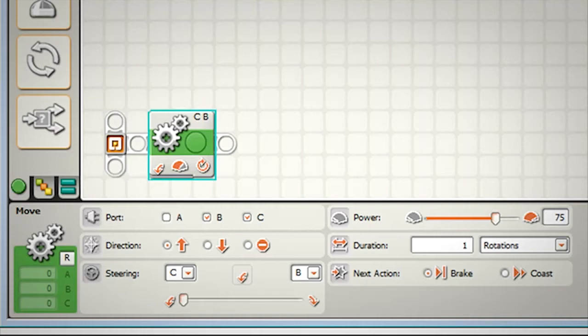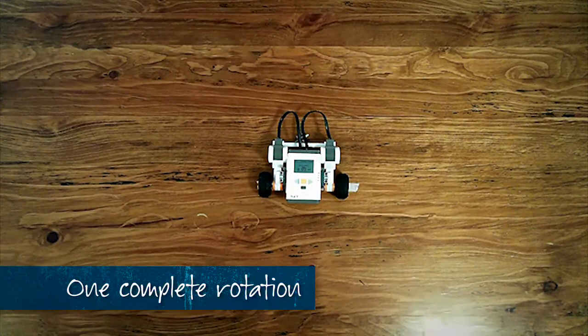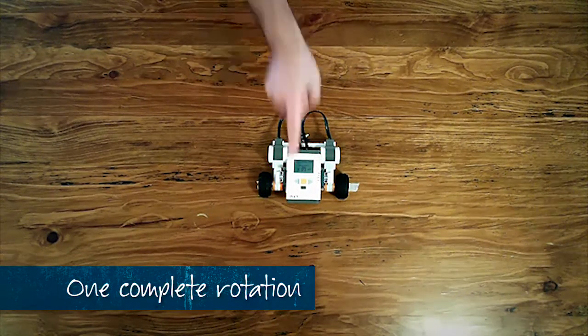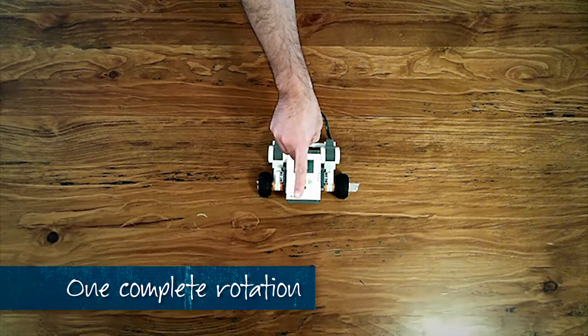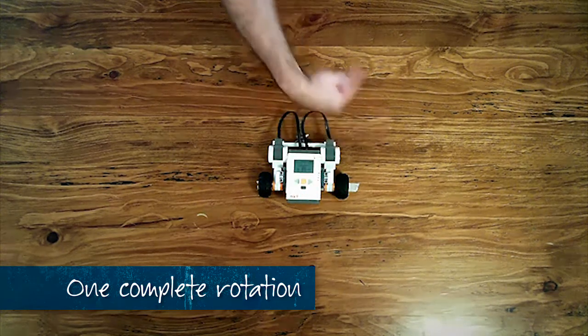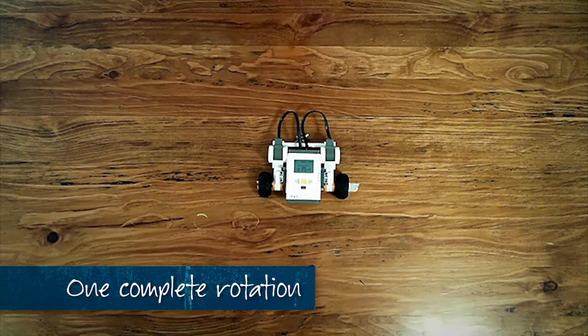So in the NXTG software we have programmed our robot to turn around one complete rotation. If my robot starts off pointing that direction and does a nice sharp turn to the left for one complete rotation, we expect it to come all the way back around facing in that direction. Let's give this program a go and see what happens.